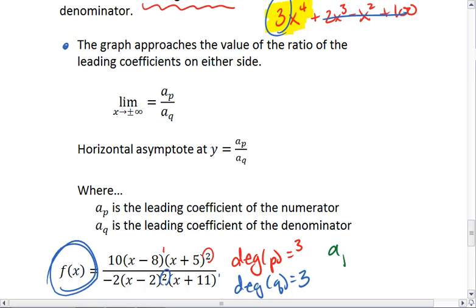Their leading coefficients, the numerator is 10, the denominator is negative 2. As x gets really big, this output is going to keep this ratio.